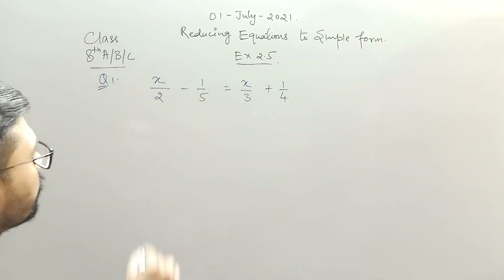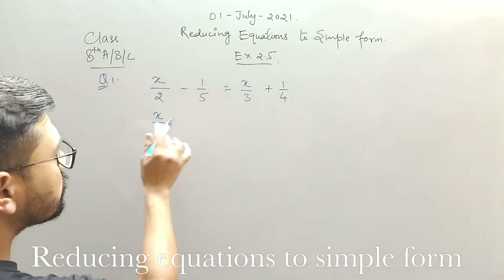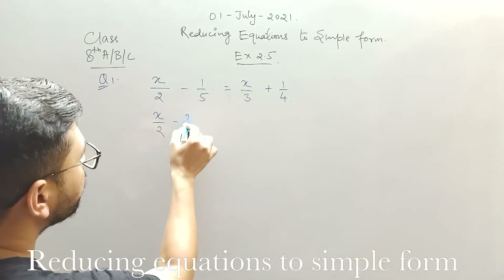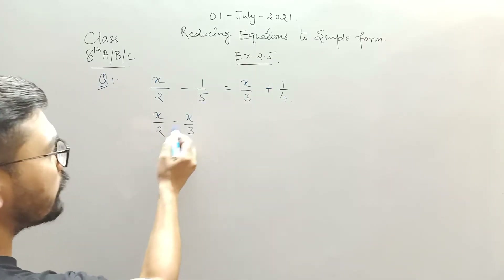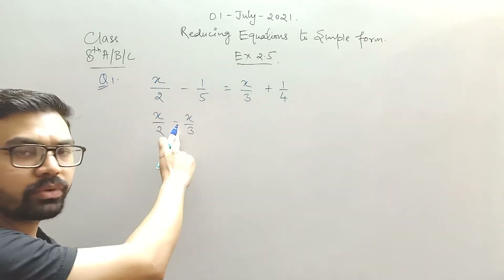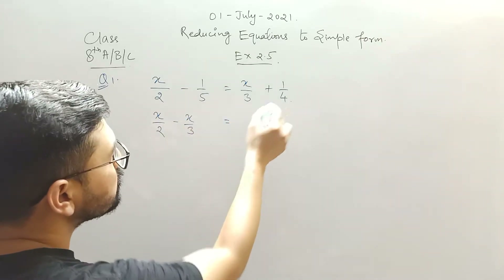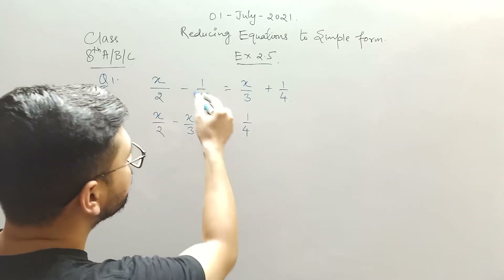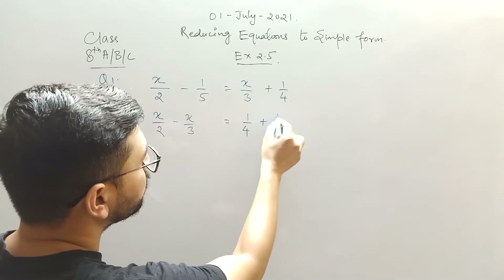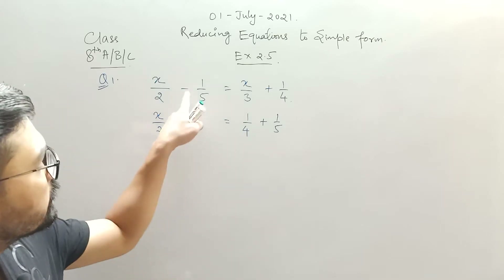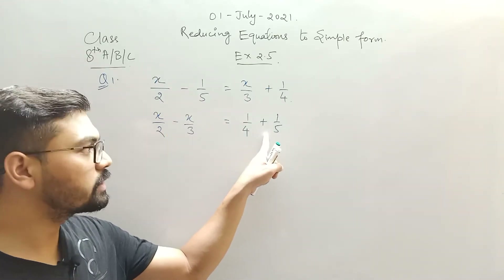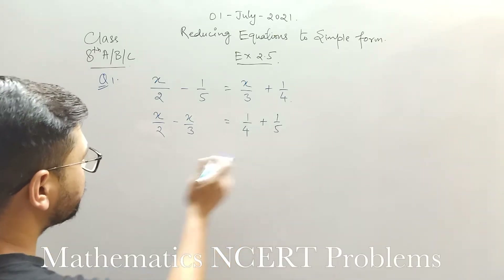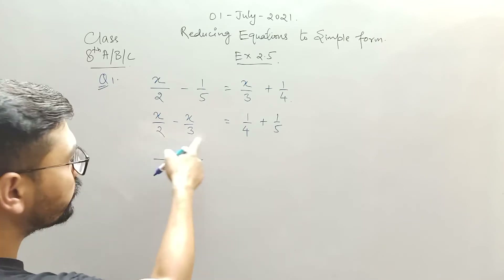For that, x by 2 stays on the LHS and I transpose x by 3 to the LHS. On the RHS, x by 3 was positive but after transposing to LHS the sign becomes opposite. Similarly, 1 by 4 stays on the RHS and I transpose 1 by 5 to the RHS — it had a negative sign on the LHS but after transposing to RHS the sign changes to positive.